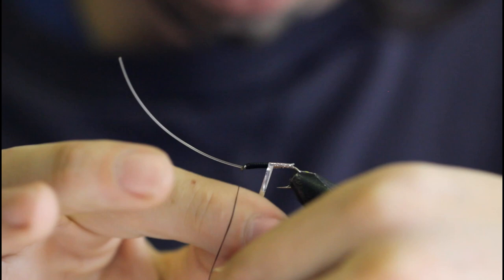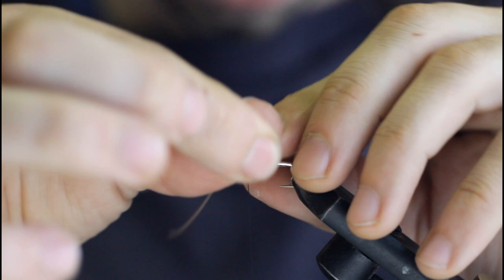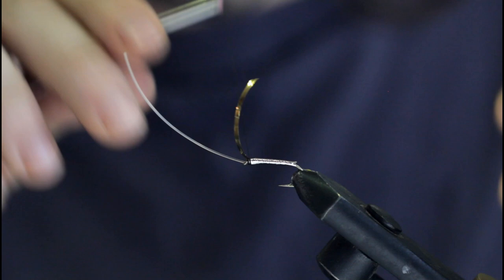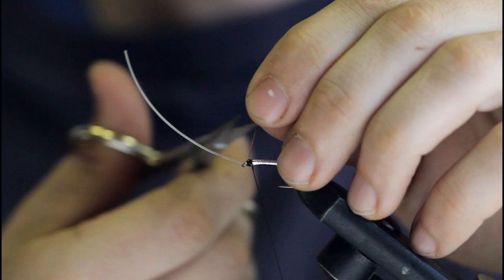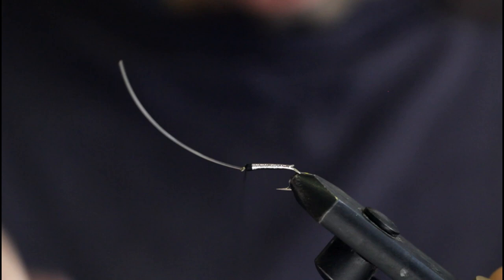Now I'm going to grab the tinsel and wrap that up in even touching turns. And secure it with the thread. I like to go in front and behind of the material here. And now just build up a head here and I'll tie it off.